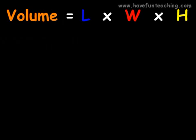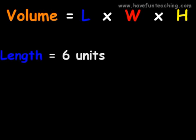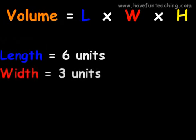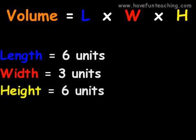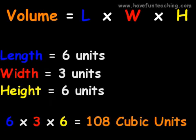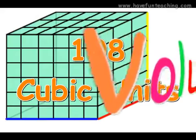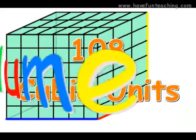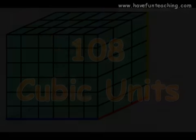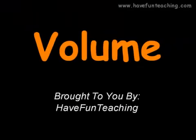The length equals six units long, the width equals three units wide, and the height equals six units high. Now we need to multiply them: six times three times six equals one hundred and eight cubic units. We did it! Yes! Can I have a candy bar? Yes! Oh no, I tricked you! Oh man!